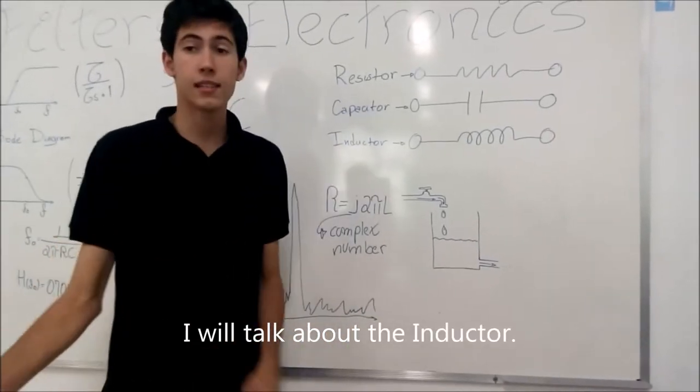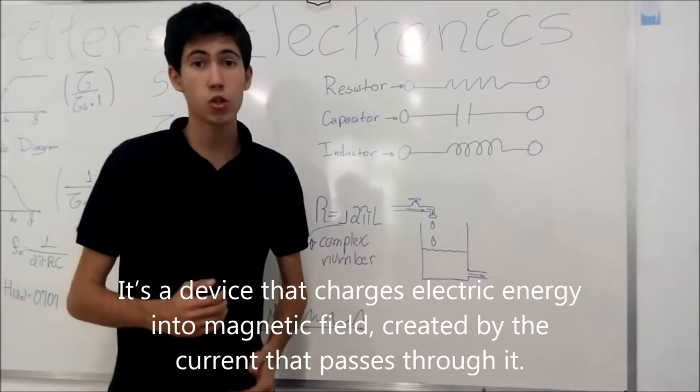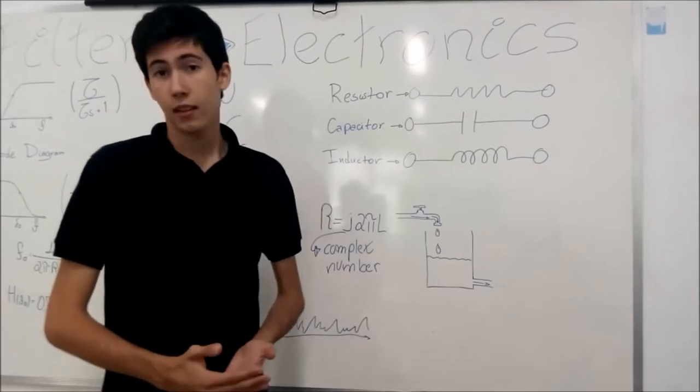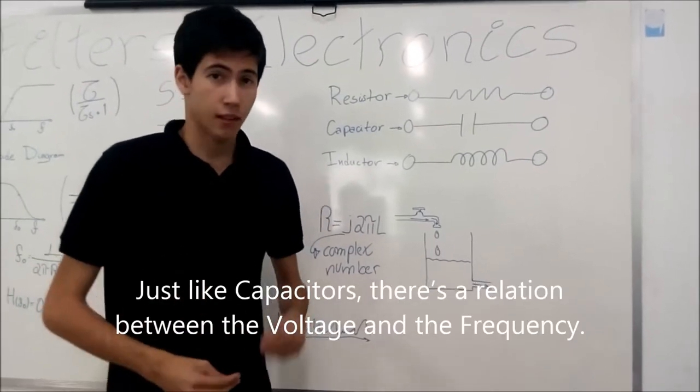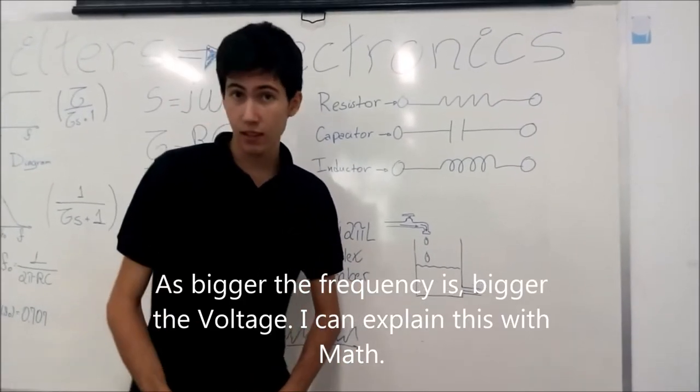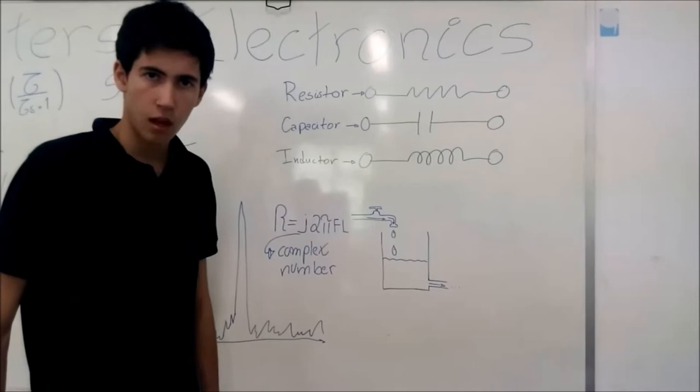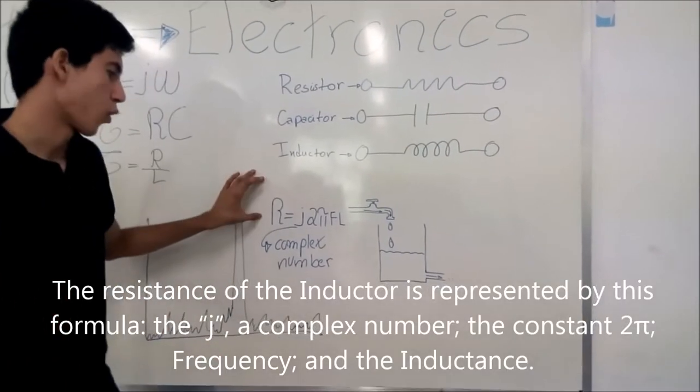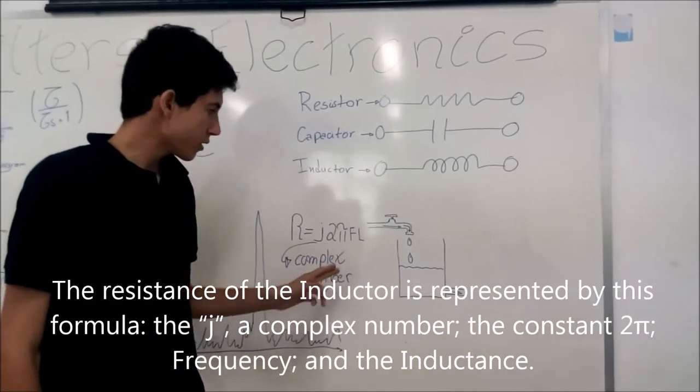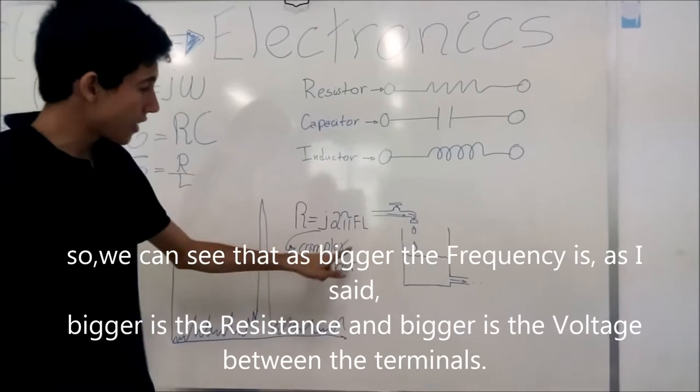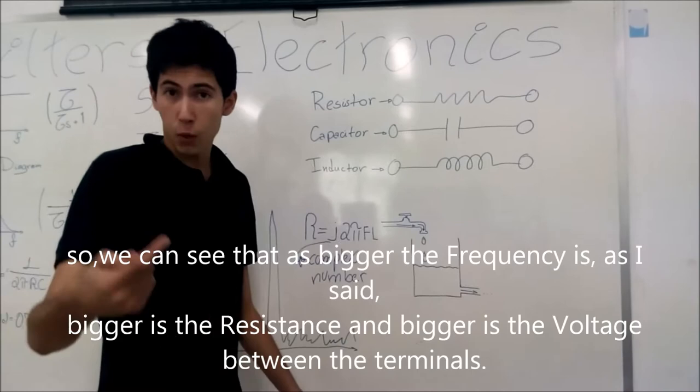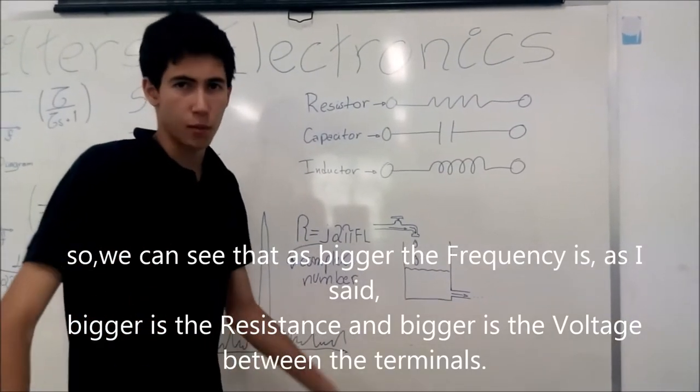I will talk about the inductor. The inductor is a device that charges electric energy into a magnetic field, created by the current that passes through it. Just like capacitors, there is a relation between the voltage and the frequency. As bigger the frequency is, bigger the voltage. The resistance of the inductor is represented by this formula. With J, a complex number, the constant 2π, frequency and inductance. So, we can see that as bigger the frequency is, bigger is the resistance. And with a big resistance, bigger is the voltage between the terminals.